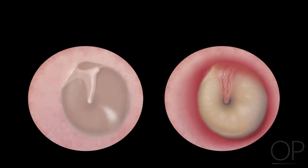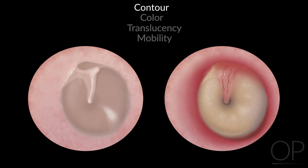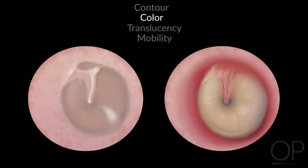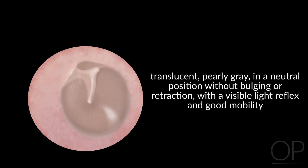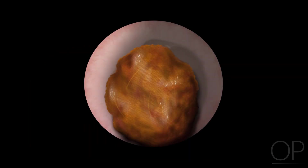When viewing the tympanic membrane, try and examine these four characteristics: contour, color, translucency, and mobility. Is the tympanic membrane in a neutral position or is it bulging or retracted? Is it translucent or opaque? How mobile is the tympanic membrane with air insufflation? Normal is typically described as translucent, pearly gray, in a neutral position without bulging or retraction, with a visible light reflex and good mobility. The view of the tympanic membrane may be obstructed by cerumen, and this should be removed via curette, gentle suction, or irrigation.